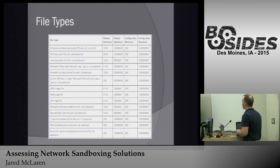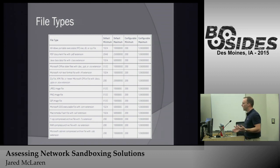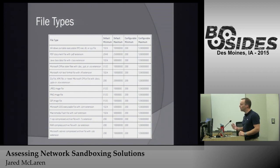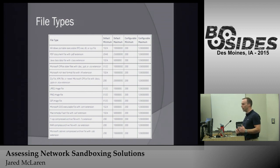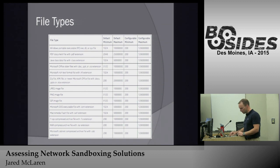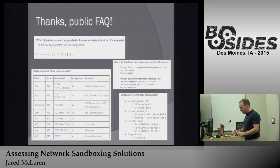Here's an example from the McAfee ATD side — the types of files typically supported: Windows PE files, DLLs, Office files, image files. If you've seen any of the Microsoft bulletins in the last few years about the GDI library vulnerabilities, a lot of those are in images, so we see a lot of exploits going over those — kind of an important one to pay attention to.